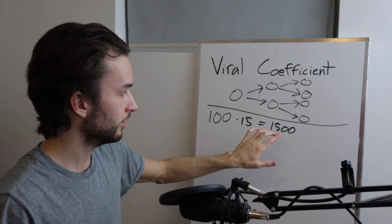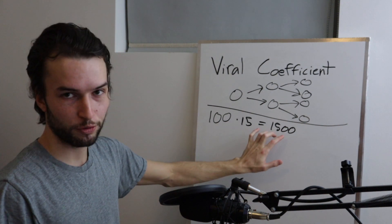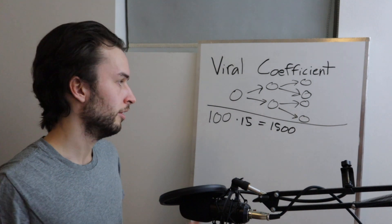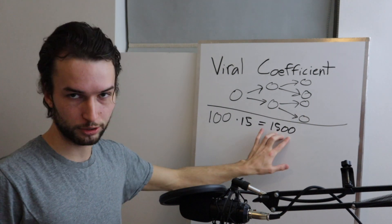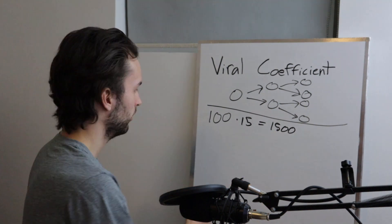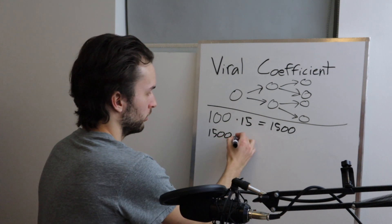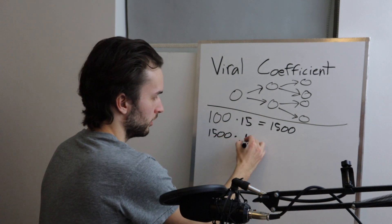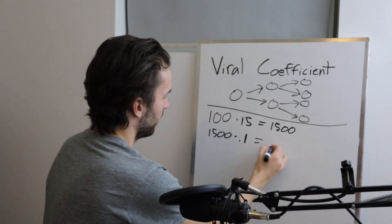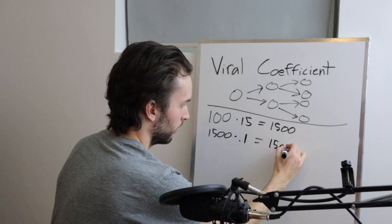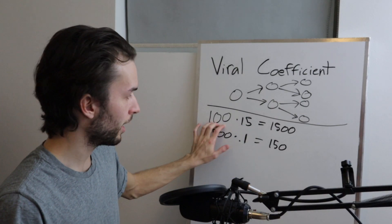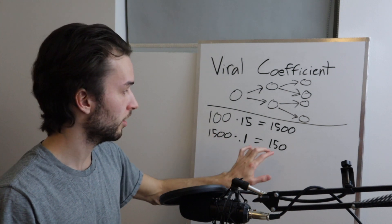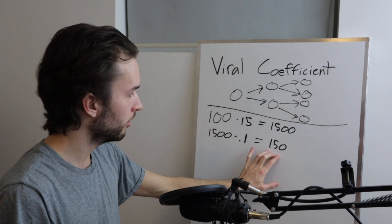So this was our initial customers, that's the number of shares they each do on average, and so this is the total number of shares performed. And let's say that 10% of those shares actually convert a new customer, so we'll take 1500 and we'll times it by 0.1, that's the 10%, and then that'll give us 150.